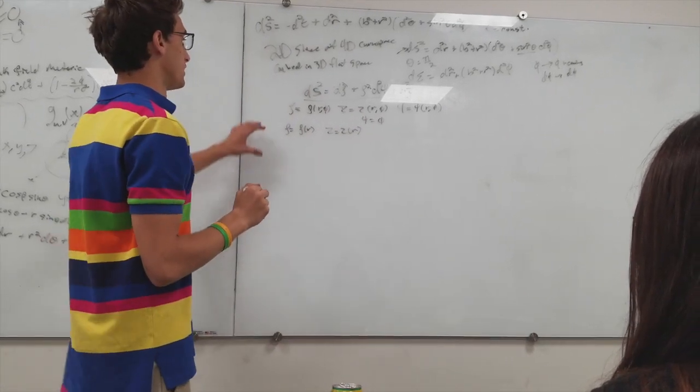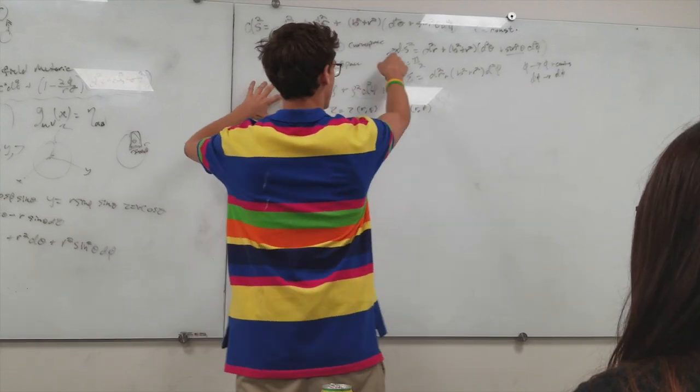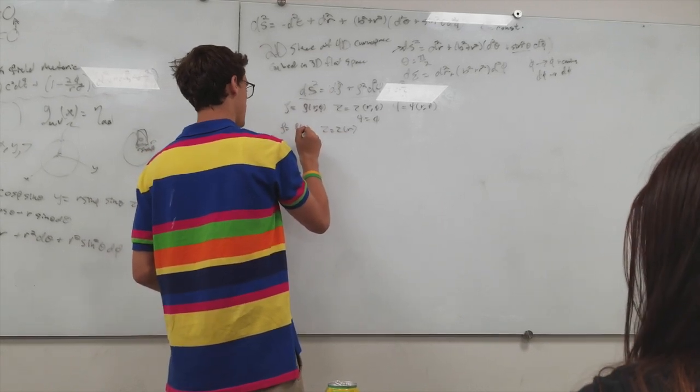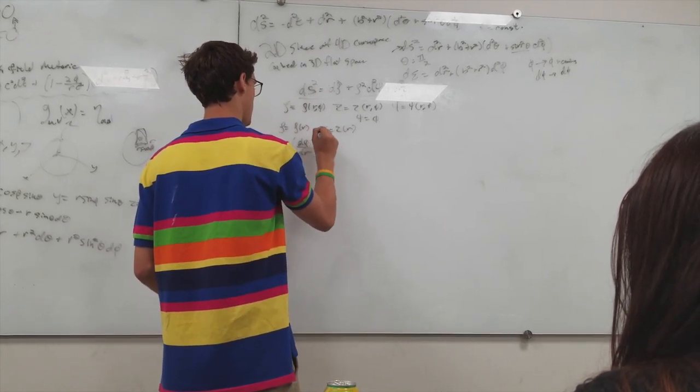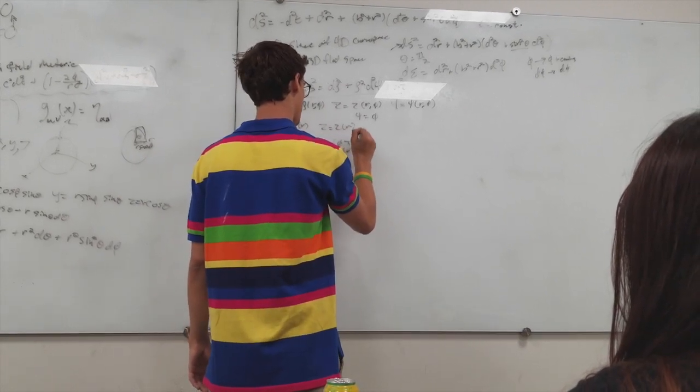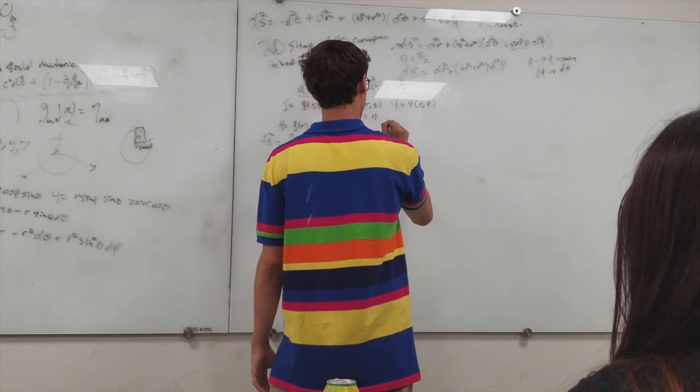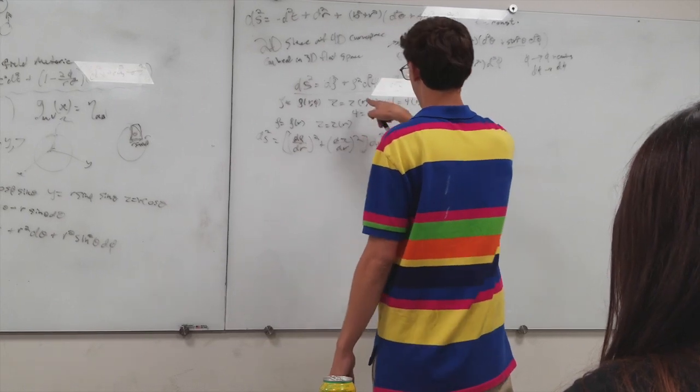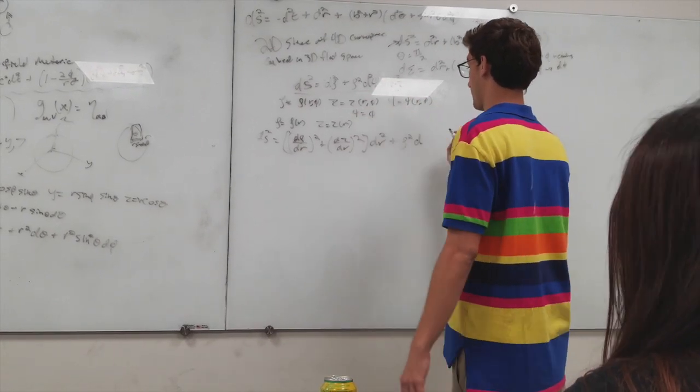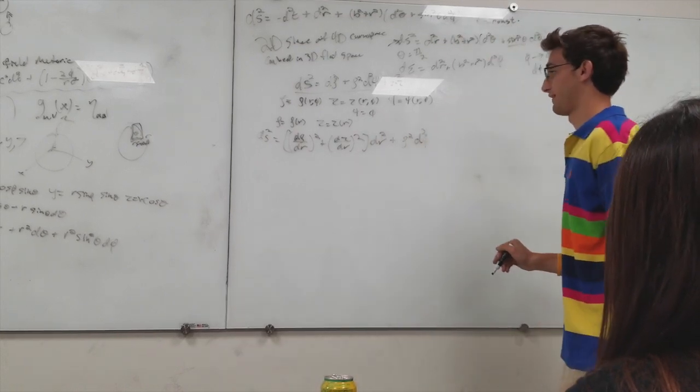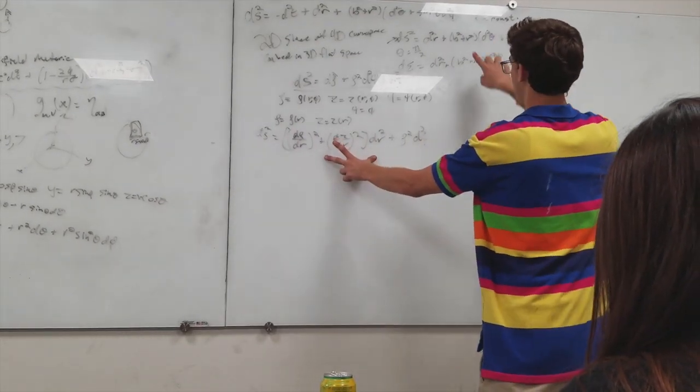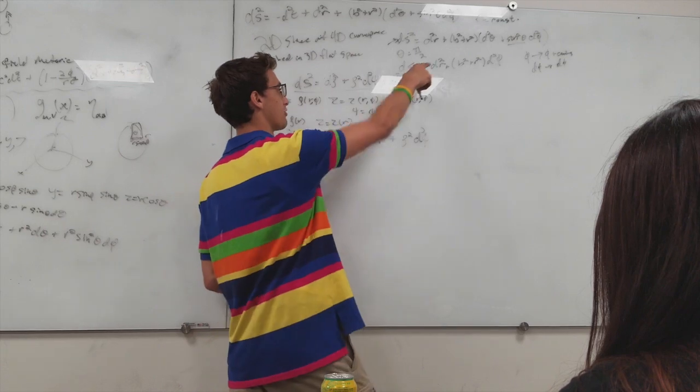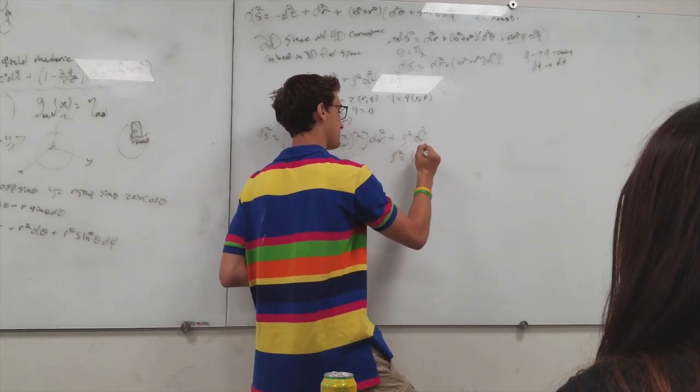So, like I said, our goal is to make this metric look like this one. So how we could do that is we could say ds squared is d rho over dr squared plus dz over dr squared times dr squared plus rho d, now we set phi equal to phi. In order for this to match up with here, this factor must equal one. And then we already know rho, we could just substitute rho squared equals b squared plus r squared.